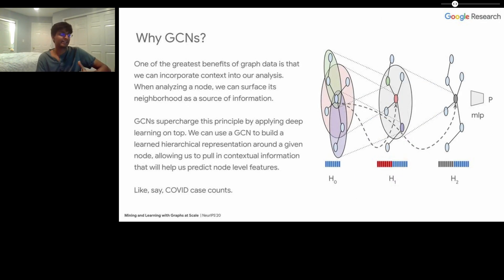One of the greatest benefits of graph data is that we can incorporate context into our analysis. When analyzing a node, we can surface its neighborhood as a source of information. If you remember what we said about deep learning at the beginning, the more information you can provide, the more of these obscure high-level correlations the model has access to, the better the model's underlying prediction is going to be. GCNs supercharge this principle by applying deep learning on top of the graph structure. I'm not going to get into the technical details too much - we have an entire section of this workshop dedicated to that. But suffice to say, we can use a GCN to build a learned hierarchical representation around a given node, which allows us to pull in contextual information that will help us predict node-level features, like COVID case counts.